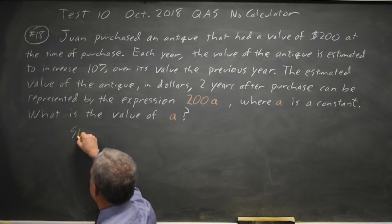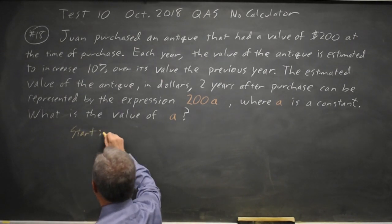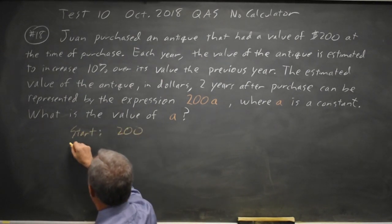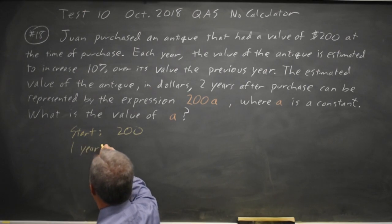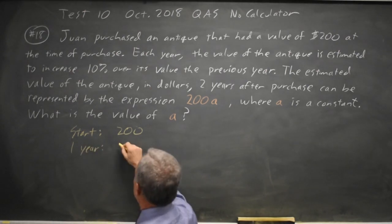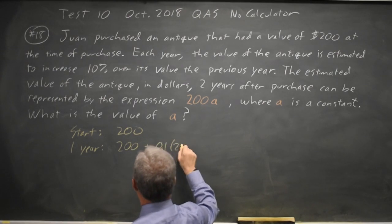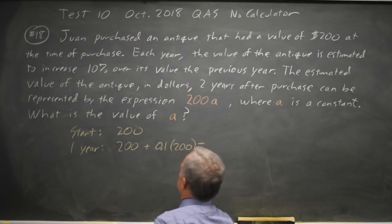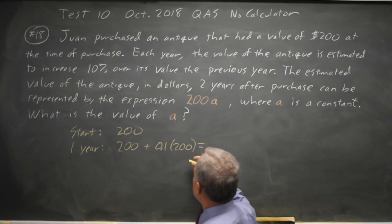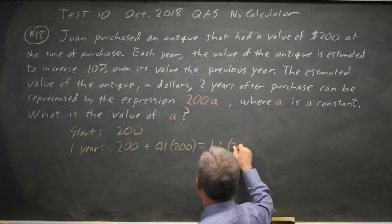So, we start at 200. After one year, we have our previous value plus 10% times our previous value, which is 1 times 200 plus 0.1 times 200, which equals 1.1 times 200.